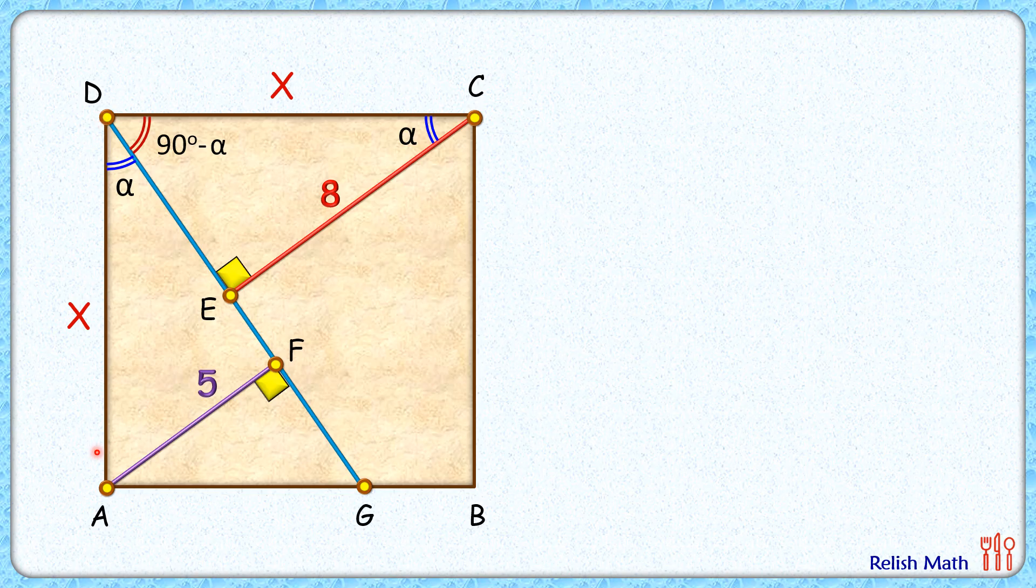Same here in triangle AFD, applying angle sum property we get this angle as 90 minus alpha. Now in this green triangle and in this pink triangle, we have got two angles as alpha and 90 minus alpha, and the side between them is x.